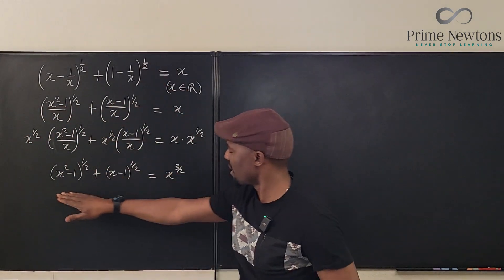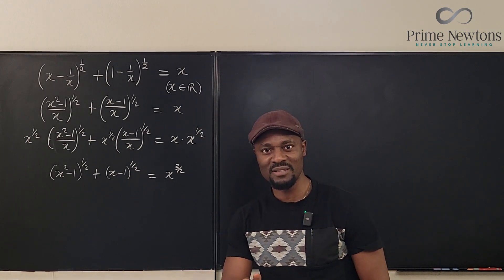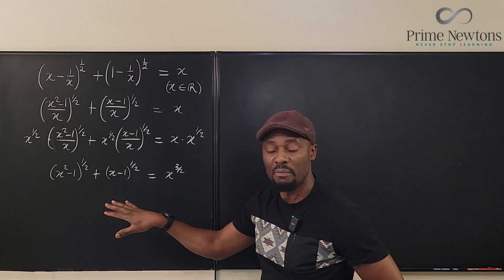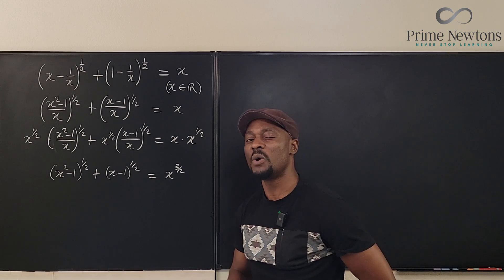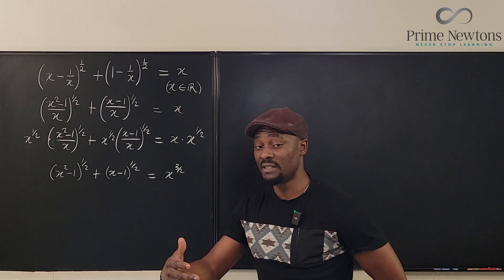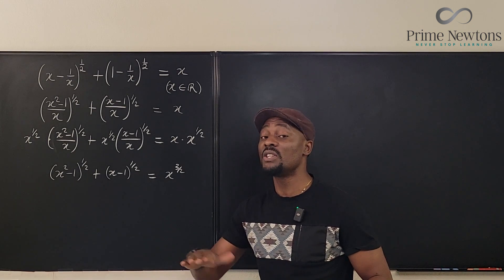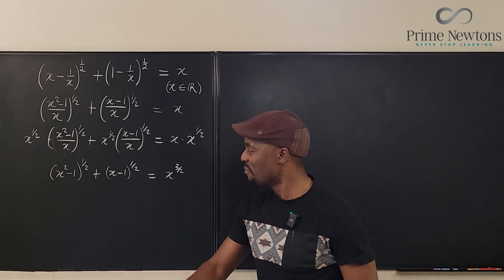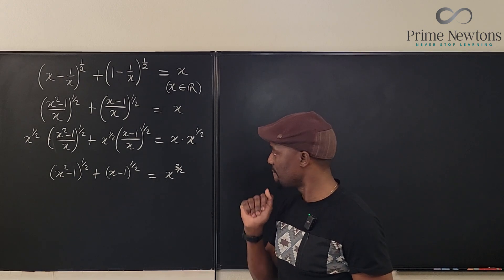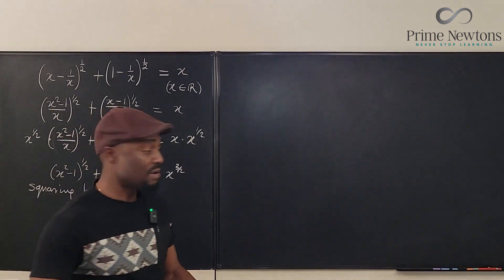This would have been square root expressions, but now I'm going to square both sides. Remember that squaring both sides can introduce extraneous solutions, so we'll need to check them at the end — but that's not a problem. Let's go ahead and square both sides.